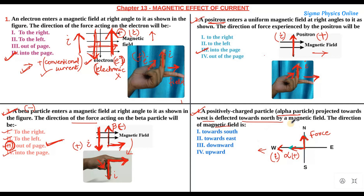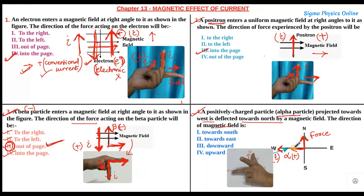It's very important to realign your fingers in accordance to the question, obeying Fleming's left hand rule. The alpha particle is moving towards the west, so I have pointed my middle finger to the left side — the west direction — to represent the direction of the current. The force is acting upwards towards the north, so I have pointed my thumb in the upward direction. These two are mutually perpendicular to each other. The forefinger representing the direction of magnetic field is pointing upwards, so the magnetic field in this case is in the upward direction — option number four.